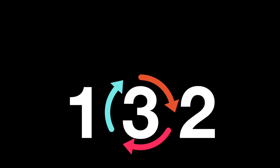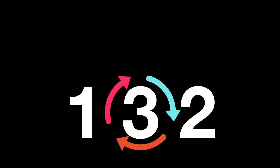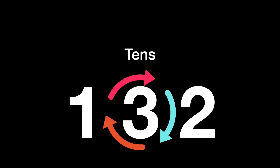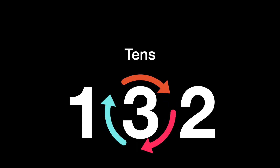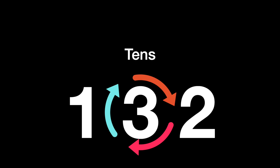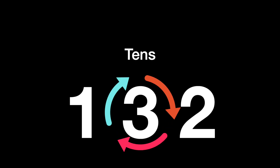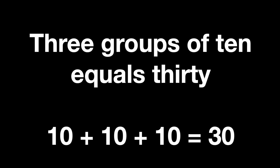Let's change the number slightly and look at 132. Can you see that the three is in the middle now — not at the end? The three is now in the tens place. And because it is in the tens place, the value of three isn't three anymore. Three now represents three groups of 10, which means three is equal to 10 plus 10 plus 10, so the value of the three is 30.